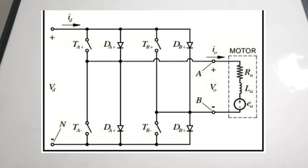The last converter discussed is the full-bridge converter, which is a DC-to-DC converter. It has the additional feature of allowing reverse current flow — for example, if a motor is connected to the load, current can flow back to the source. Similar to buck-boost converter types, it also produces a reverse polarity output voltage.